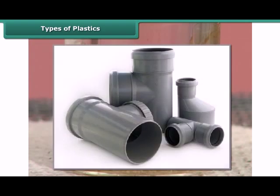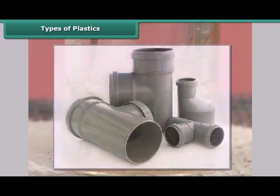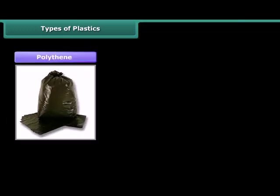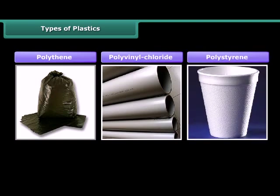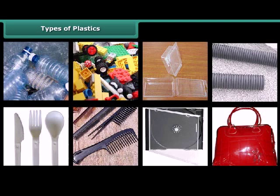Some examples of thermoplastics are polythene, polyvinyl chloride and polystyrene. These are used in manufacturing of water pipes, drain pipes, packaging, bags and bottles, toys, combs, disposable cutlery, and CD and DVD cases.